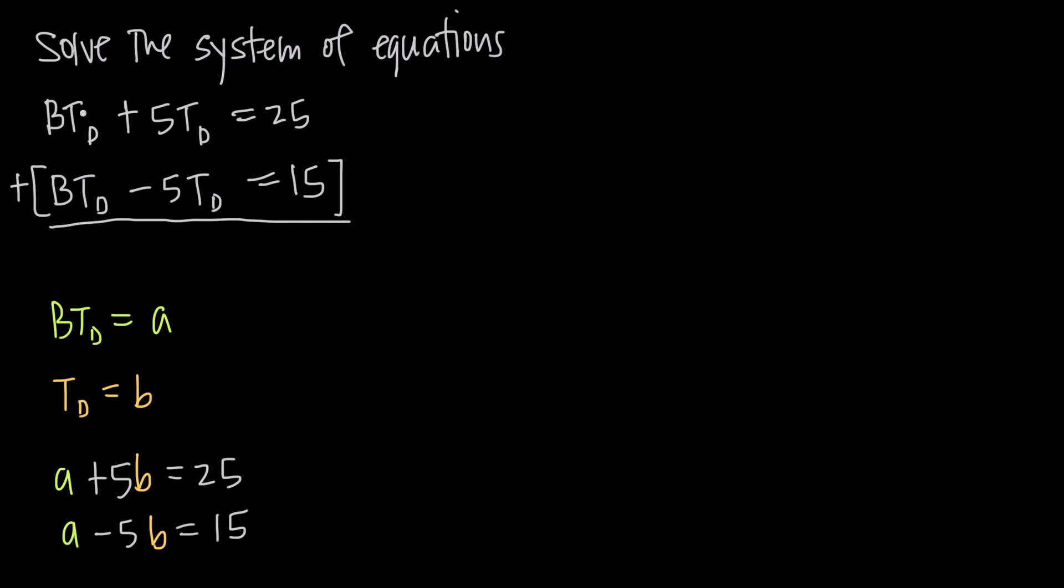So when we add, we'll get BT sub D plus BT sub D is 2BT sub D. 5T sub D plus negative 5T sub D is like 5 minus 5, that's 0, that's going to cancel. And then we have 25 plus 15, which equals 40.